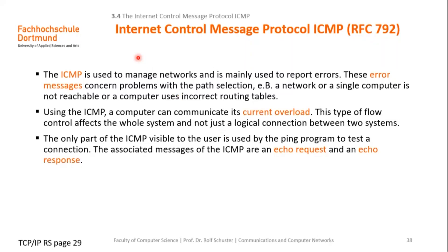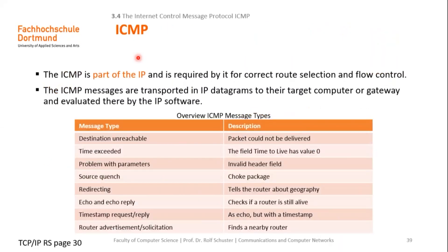The ICMP, Internet Control Message Protocol, specified in RFC 792, is used to report errors. We typically use this protocol when we use the ping program or the traceroute program, but basically it's a protocol that permits receiving error messages or control messages.